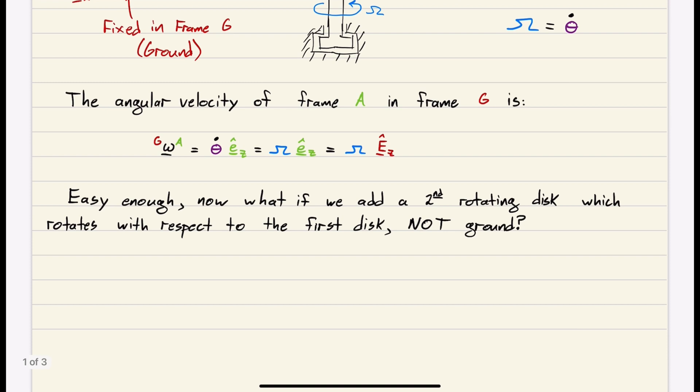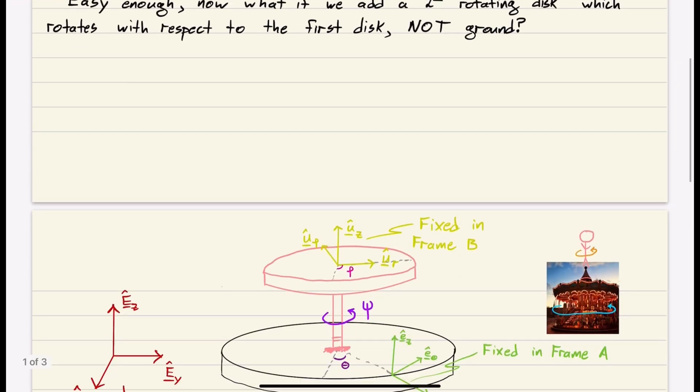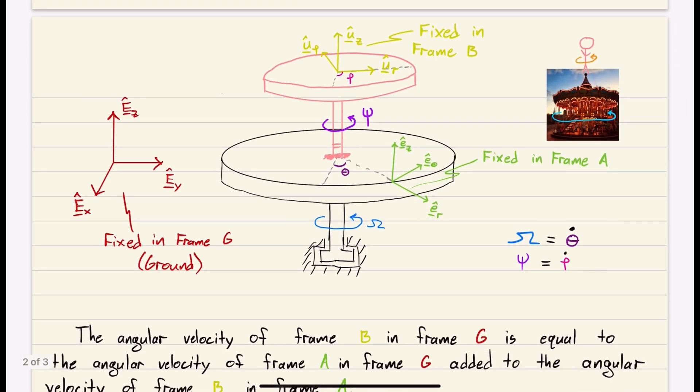Now what if we added a second rotating disk, which rotates with respect to the first disk, not to ground? This is our first disk with frame A. We still have frame G fixed to ground, and this disk is spinning with respect to ground. But now we added a second disk on top of the first disk. When this one spins, it's not spinning with respect to ground, but with respect to frame A, the lower disk.